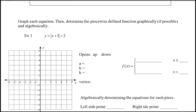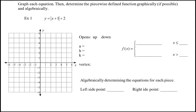Let's take a look at example number one. There's nothing in front of the absolute value, so the a value is one — that tells me the graph opens up. Be careful with the h value: flip the sign, so positive one becomes negative one. The k value is two, giving a vertex of negative one, two. I'll go to negative one on the x-axis, up to two, and place my vertex there. Since h is negative one, I can already fill in those two domain pieces.